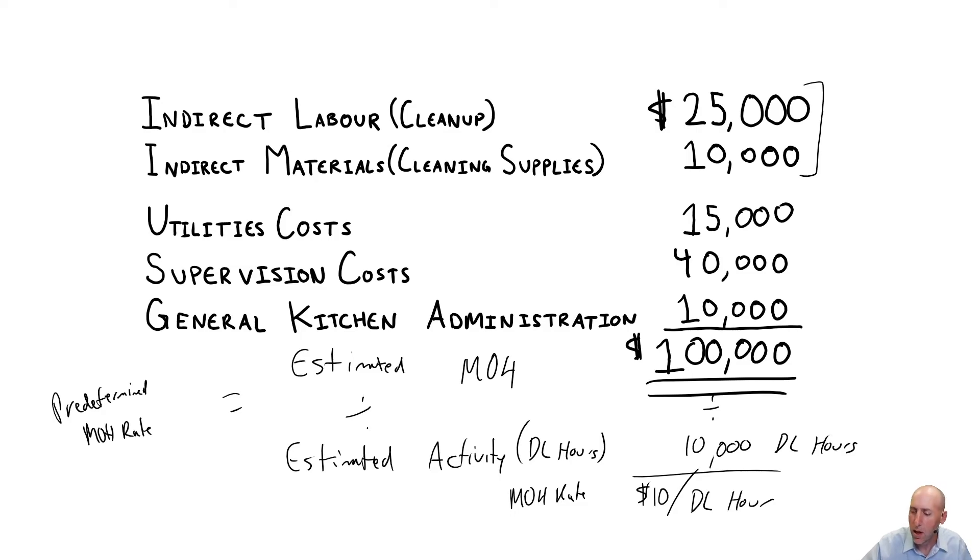So, for example, every time we're doing cleanup, maybe direct labor hours isn't a good proxy for that. Maybe it's like the number of setups, right? Every time I set up, I have to clean up. So if I just count my shifts or my setups, then that's going to be a good proxy for cleaning up.